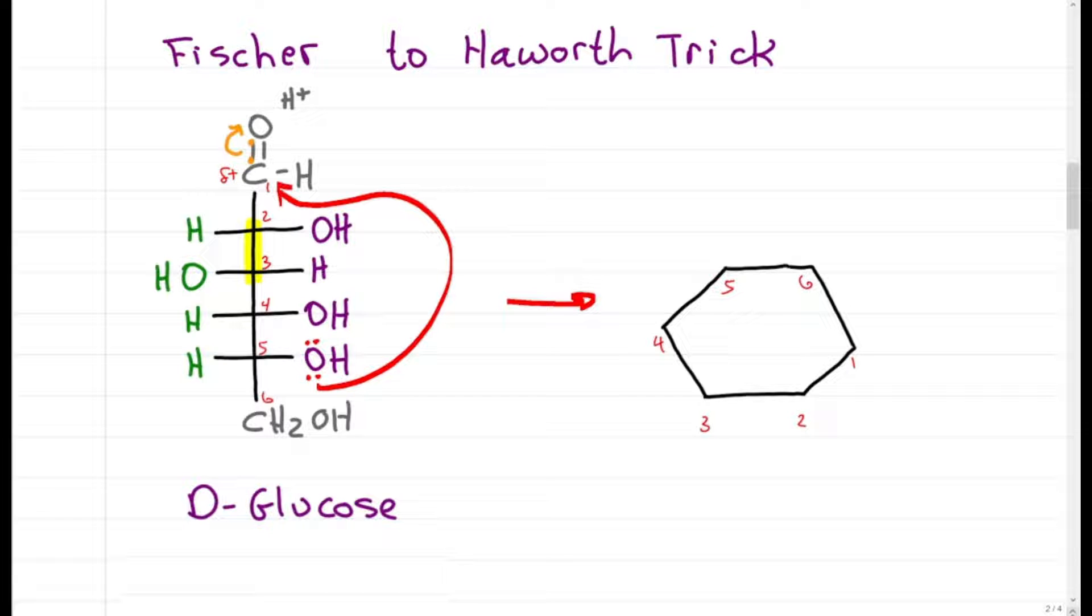Since the oxygen on carbon 5 attacked carbon 1, 6 is not in the ring, instead oxygen takes that position. Let's make the oxygen red and add it in. Again, that's the oxygen on carbon 5 attacking carbon 1, and we'll show the oxygen between carbon 5 and carbon 1 where this represents the new bond from the attack.